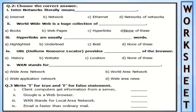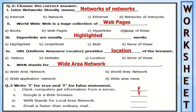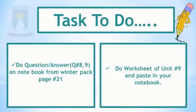Question 2 — choose the correct answer: Inter-network literally means network of networks. The World Wide Web is a huge collection of web pages connected through hyperlinks. URL stands for Uniform Resource Locator, which provides the location in the browser. WAN stands for Wide Area Network. Question 3 — true or false: Client computers get information from a server — true. WAN stands for Wide Area Network — true. Email is faster than ordinary mail — true.